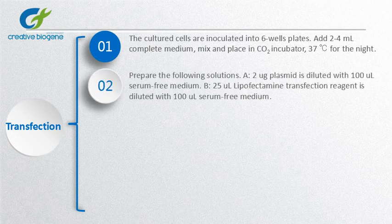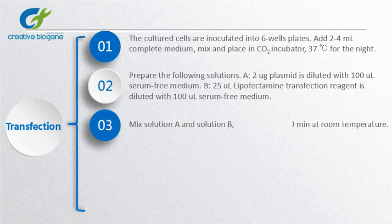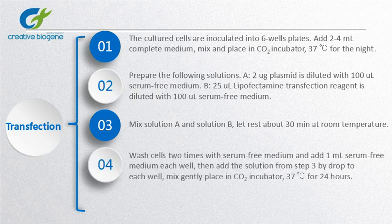Then, the following solutions A and B are prepared. Mix solution A and solution B and rest about 30 minutes at room temperature. When around 80% unilaminar cells have formed at the bottom of the culture flask, wash cells 2 times with serum-free medium and add 1 milliliter of serum-free medium to each well. Then add the solution from step 3 dropwise to each well, mix gently, and place in a carbon dioxide incubator at 37 degrees centigrade for 24 hours.